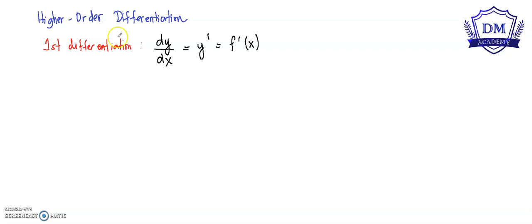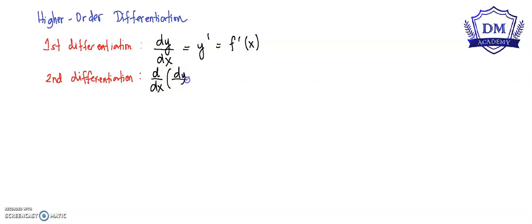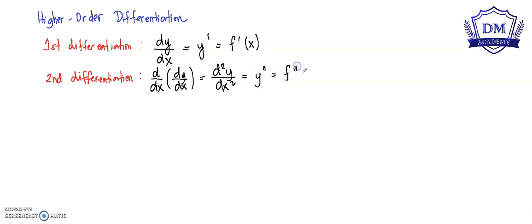Given the function f of x, it also has the second differentiation, or the third, fourth, fifth, up to the last differentiation. To find the second differentiation or the second derivative of the given function, all you have to do is find the derivative of the first derivative. That is denoted by d over dx of dy over dx, which equals d squared y over dx squared. This is also written as y double prime or f double prime of x.